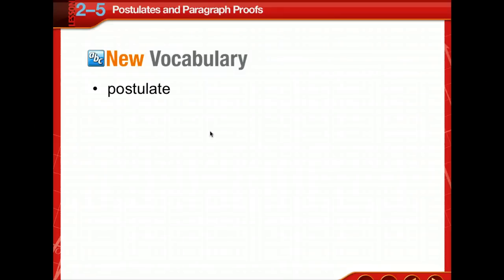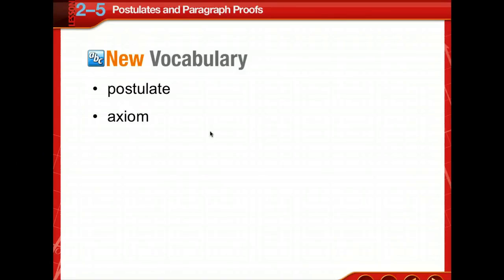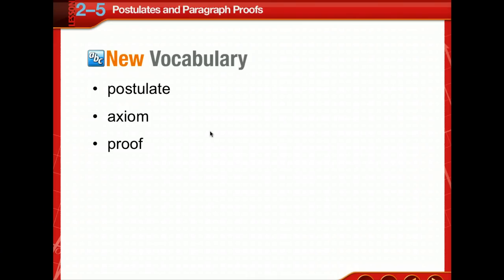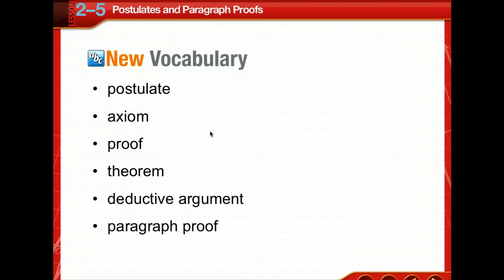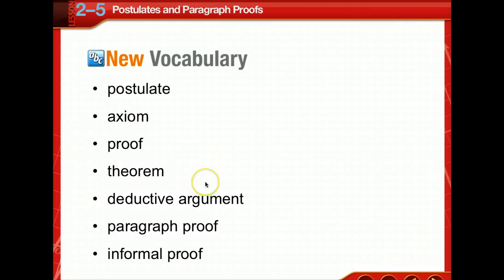We have some new vocabulary. We have a postulate and an axiom. The word axiom is just another name for a postulate. A postulate contains statements that are accepted as true without proof — just like point, line, and plane, which are undefined terms we use to define other terms. We're going to use some postulates today about points, lines, and planes. Then there's proof, a theorem, a deductive argument, and a paragraph proof. A lot of times, the paragraph proof is called an informal proof.